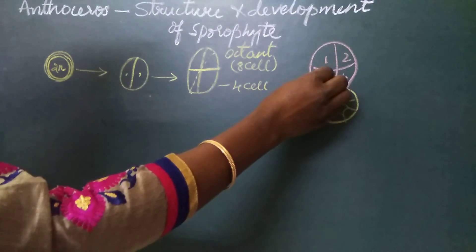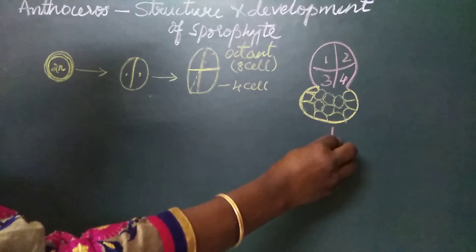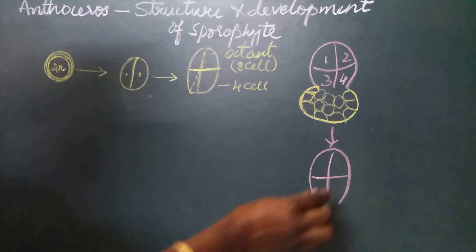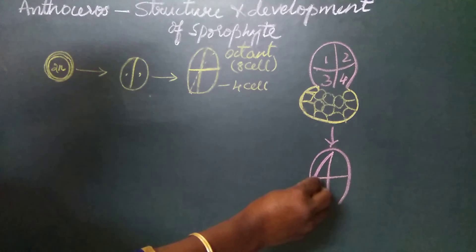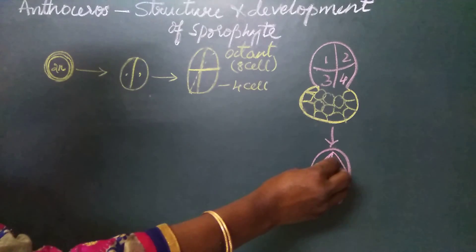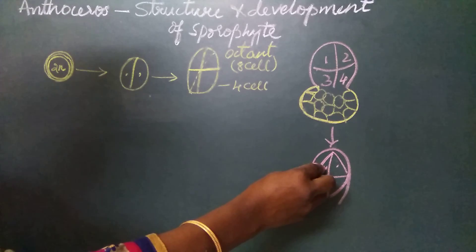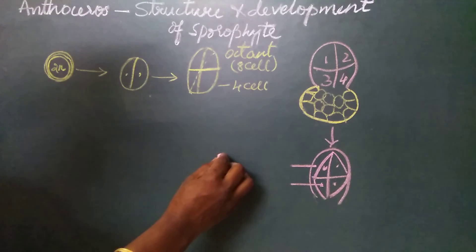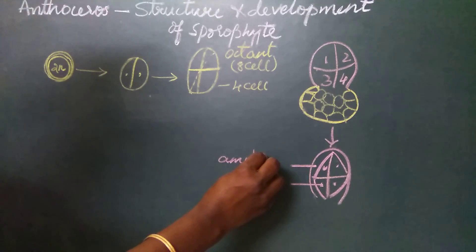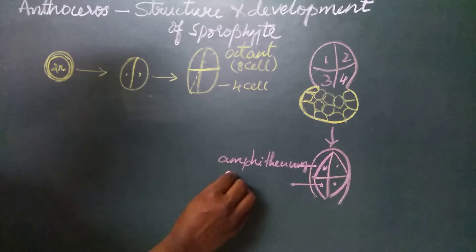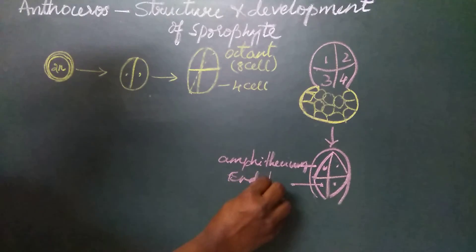At this eight-cell stage, all eight cells will divide by a periclinal wall towards the periphery of the cells. The periclinal division results in the formation of an outer layer of cells called the amphithesium and an inner mass of cells called the endothesium.